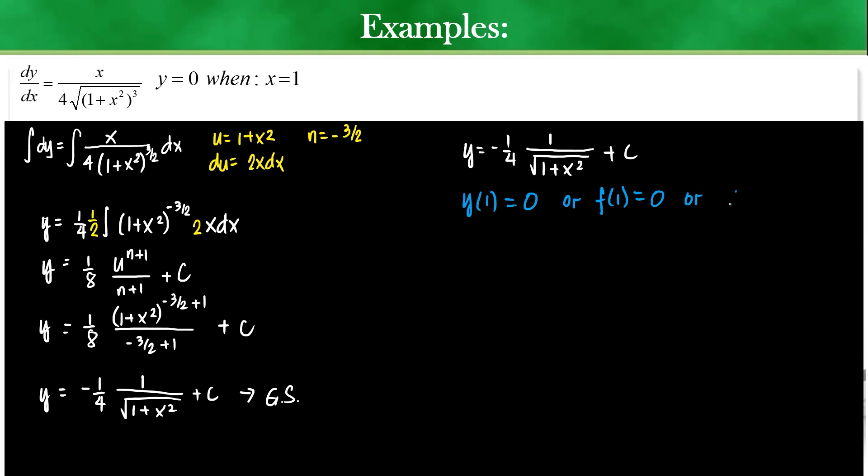Or sometimes when x is 1, sometimes it's written like those. So, when I plug in those values, the y would be 0 equals negative 1 fourth, 1 over the square root of 1 plus 1 plus c. This one is negative 1 fourth. This is 1 over square root of 2 plus c. Or I can say that constant is basically 1 over 4 square root of 2. Or multiply by square root of 2 over, so it's going to be square root of 2 over 8.